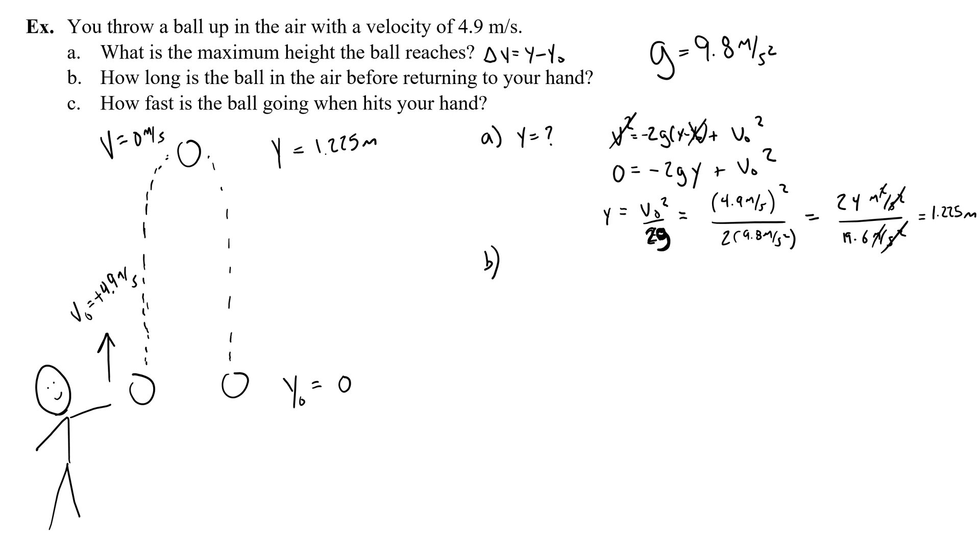If I throw the ball up at an initial height that I call 0, so I'd say y naught equals 0, and it returns to that exact same height, then I would say that y is 0 at the end, my final position is 0. Then if I use my equation, y equals negative 1/2 g t squared plus v naught t plus y naught, if I use this equation, I can get rid of y and y naught. So 0 equals negative 1/2 g t squared plus v naught t. And now I can start to solve for time.